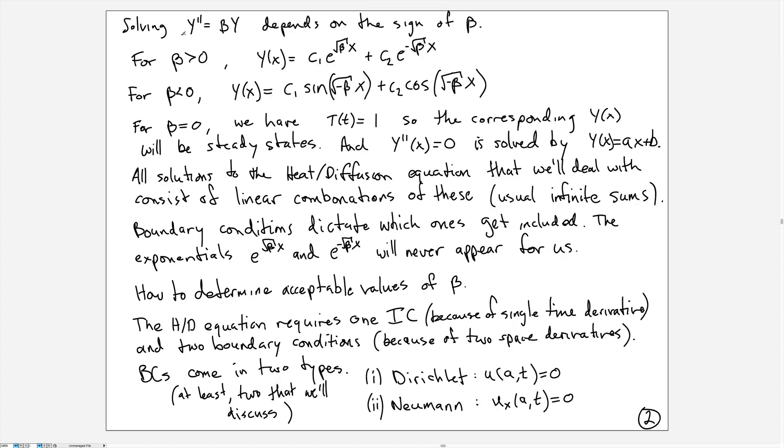To solve the equation Y'' = βY, we need to know the sign of β. Let's assume for now that β is positive. In that case, the general solution is a constant times e^(√β x) plus another constant times e^(-√β x). It turns out these will not be particularly useful to us, so we don't really have to worry about these.